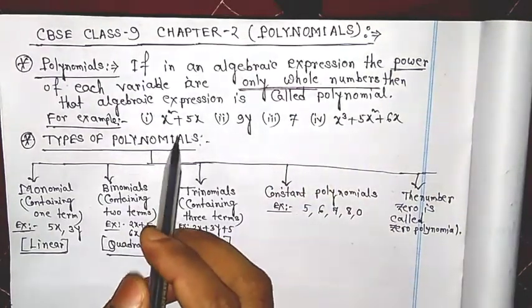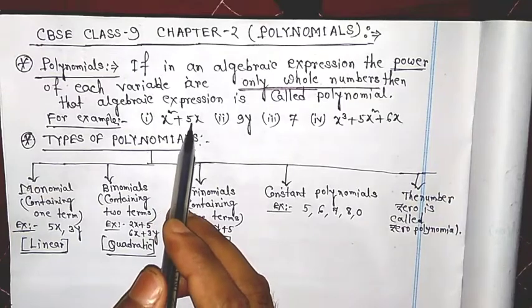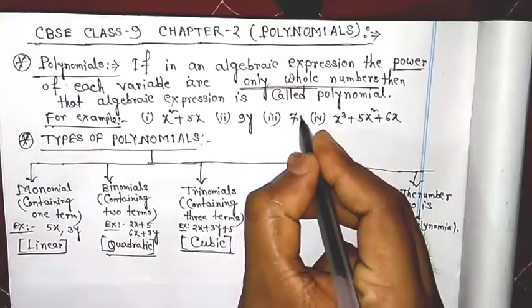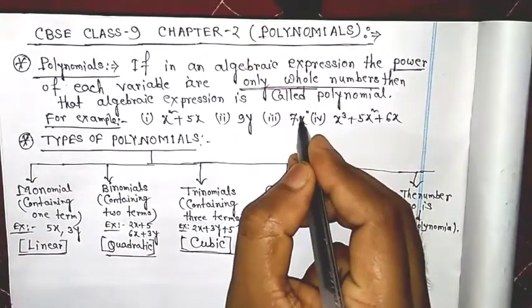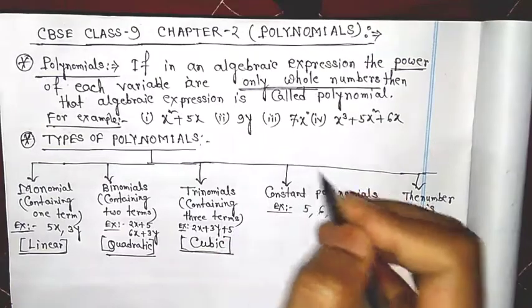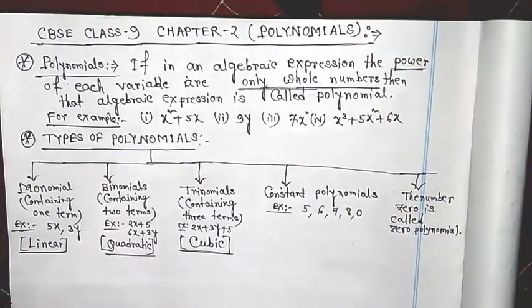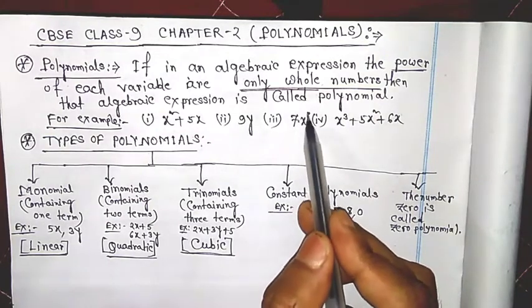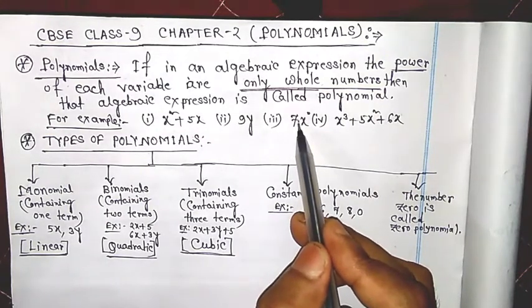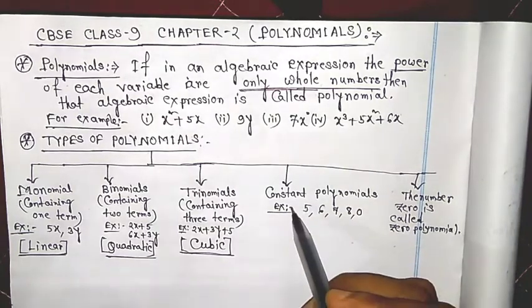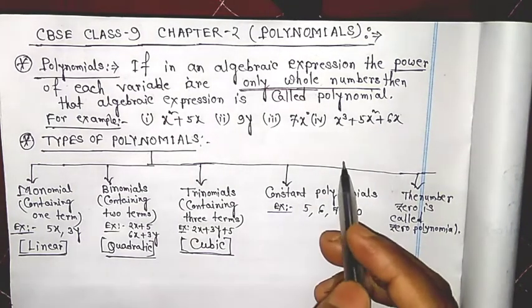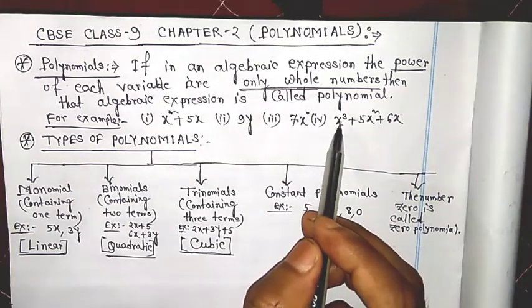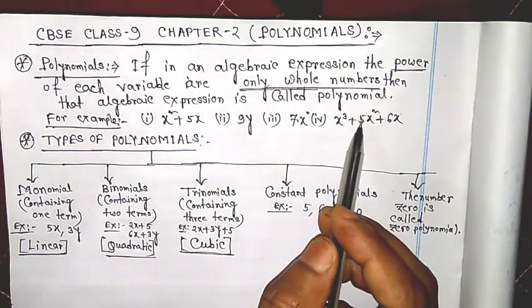Let's take some examples of polynomials: x squared, 5x, 9y, 7. Seven is also a polynomial because 7 can be written as 7 into x to the power zero. This polynomial is called a constant polynomial. So every constant like 7 is a polynomial.